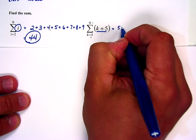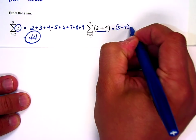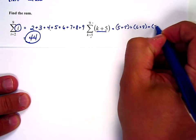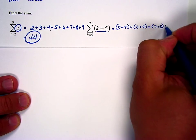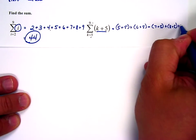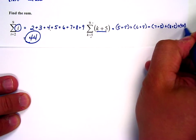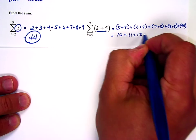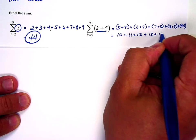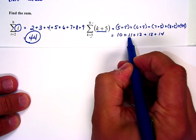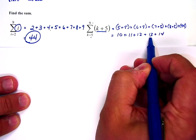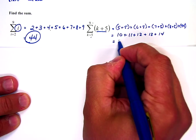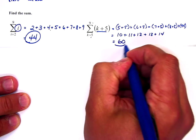So that's going to be 5 plus 5 plus 6 plus 5 plus 7 plus 5 plus 8 plus 5 plus 9 plus 5. 10 plus 11 plus 12 plus 13 plus 14 is 21, 33, 46, 60. That's the sum.